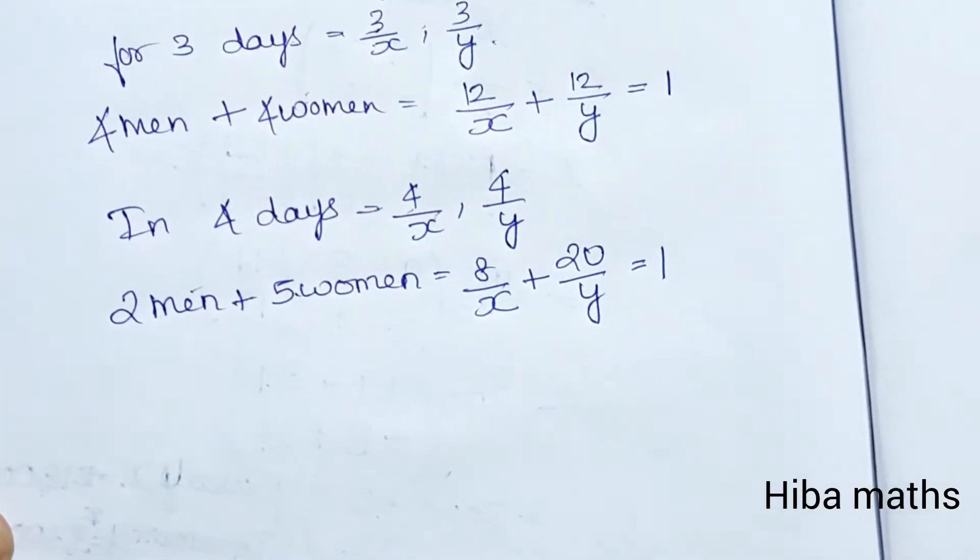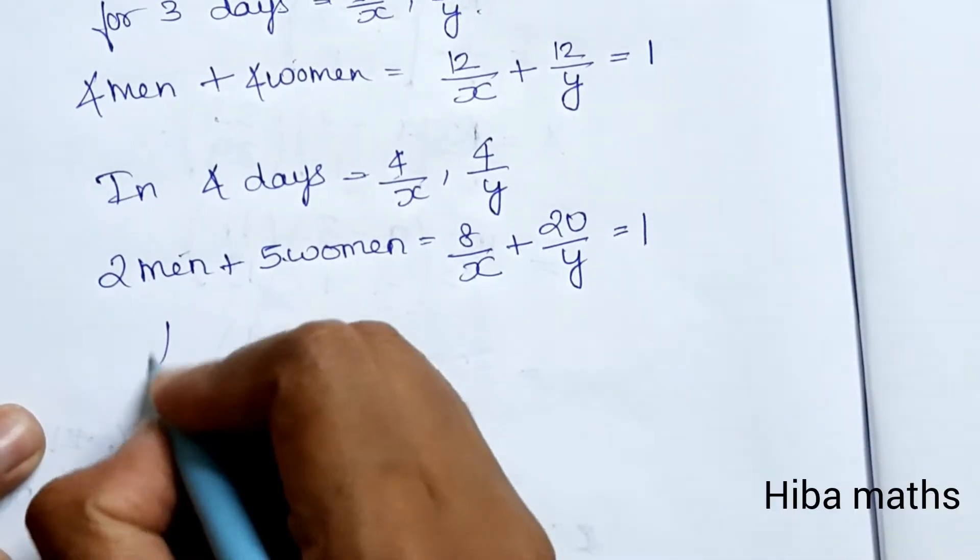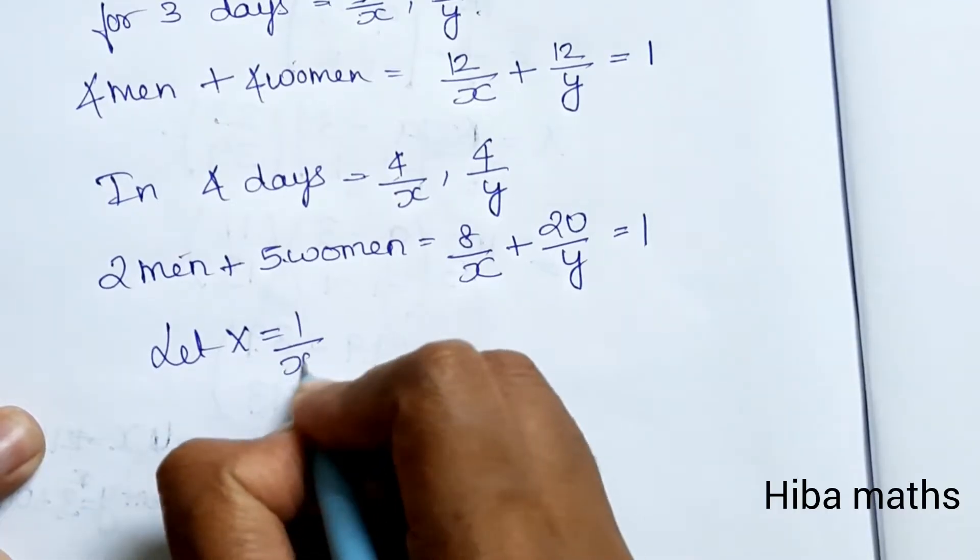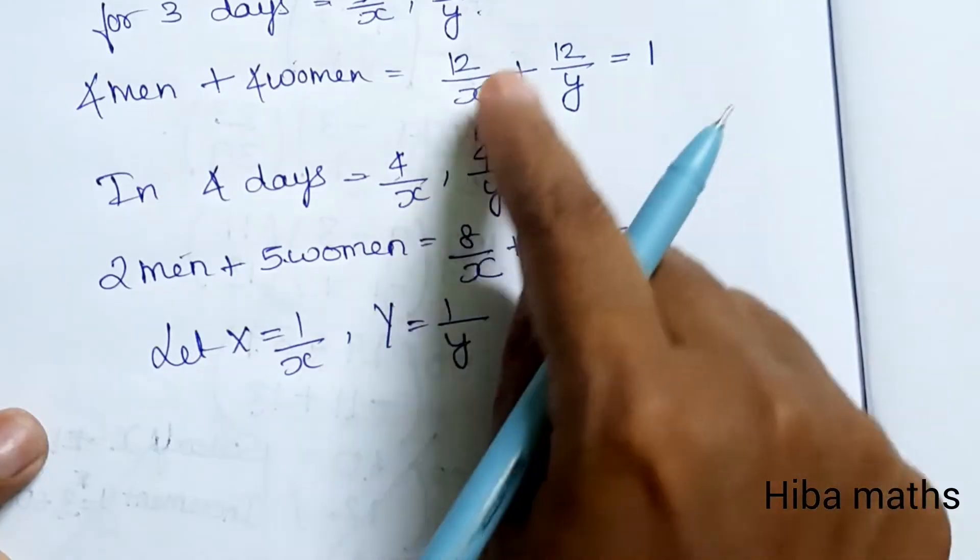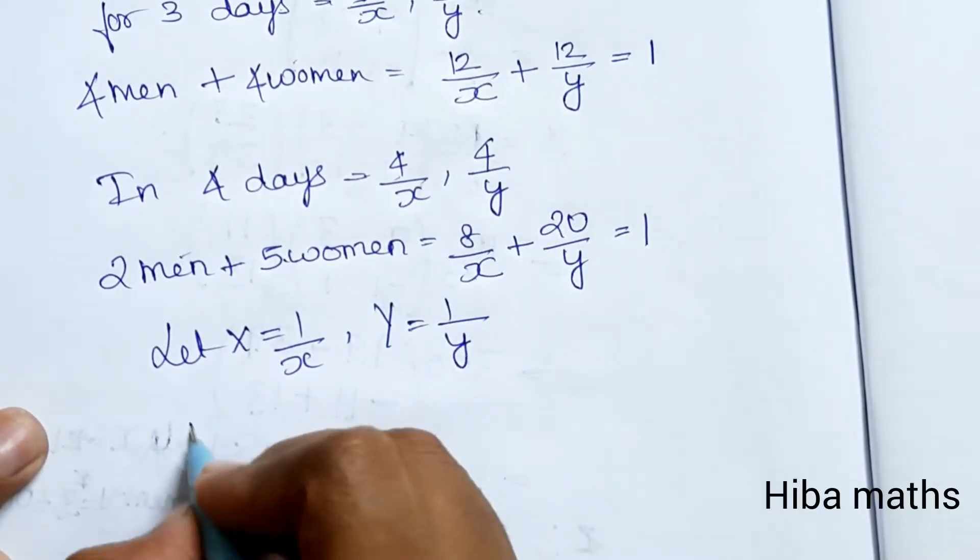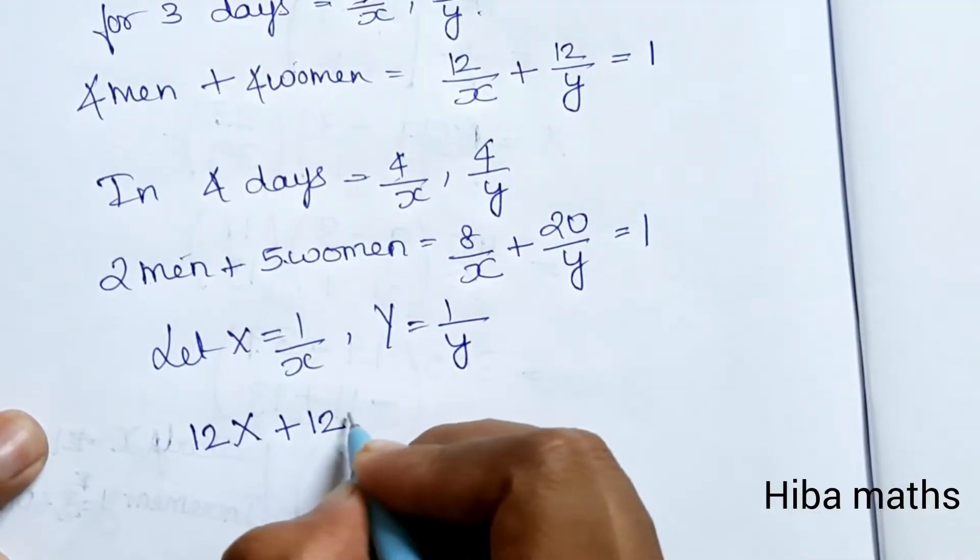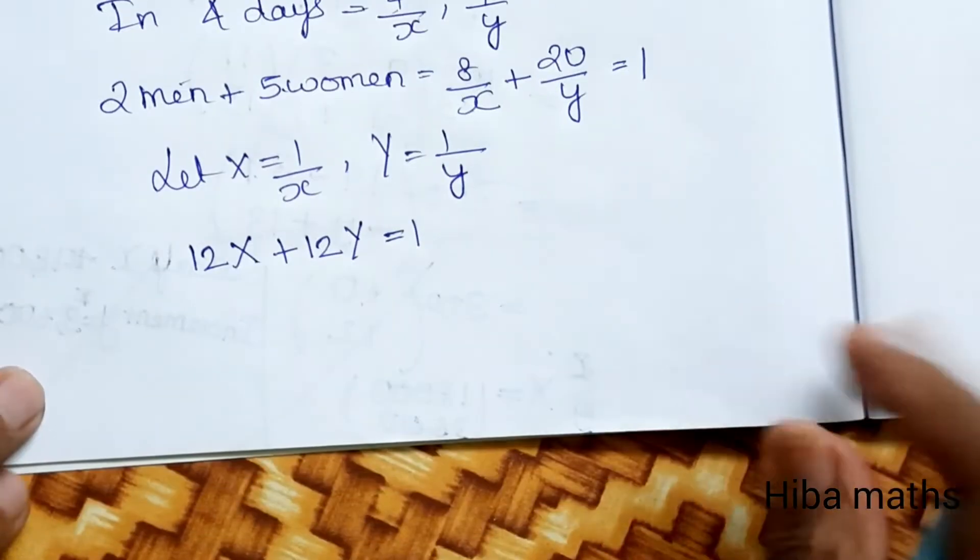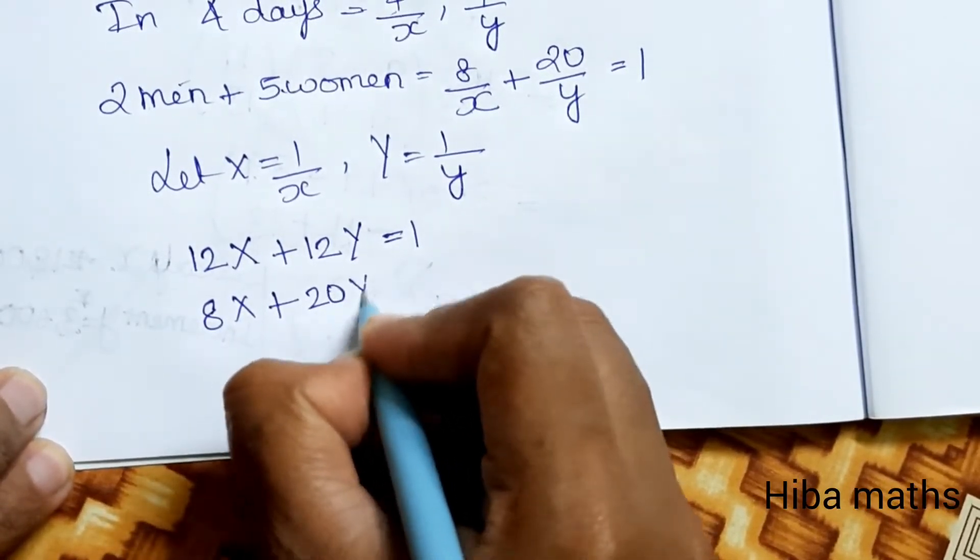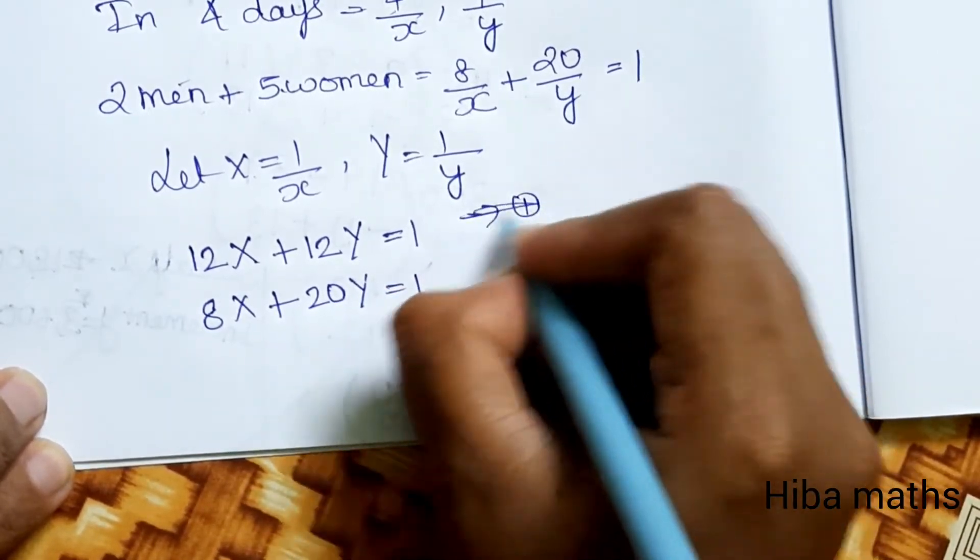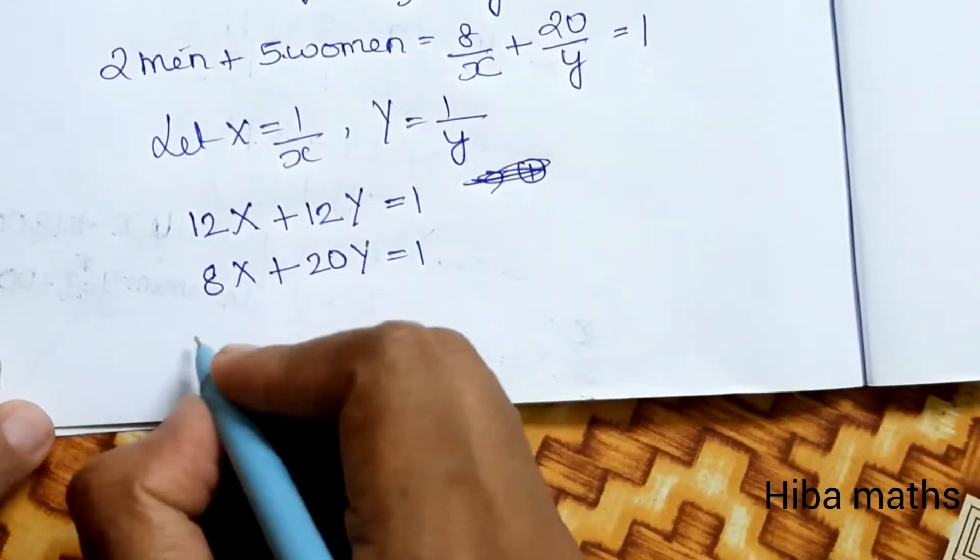Let capital X equal 1/x and capital Y equal 1/y. Substituting: 12X plus 12Y equals 1, and 8X plus 20Y equals 1. These are the first and second equations. Now we can write this in matrix format.